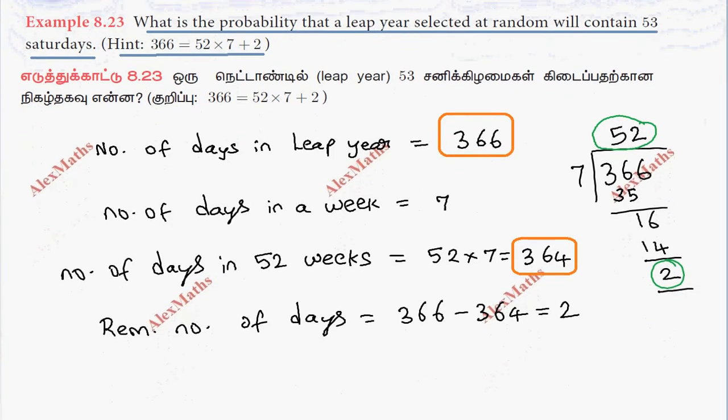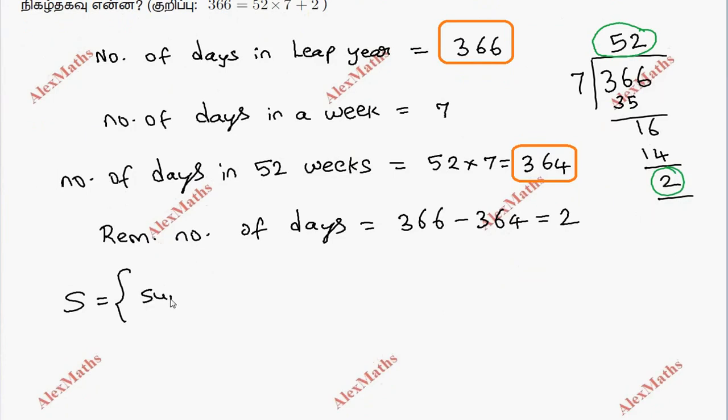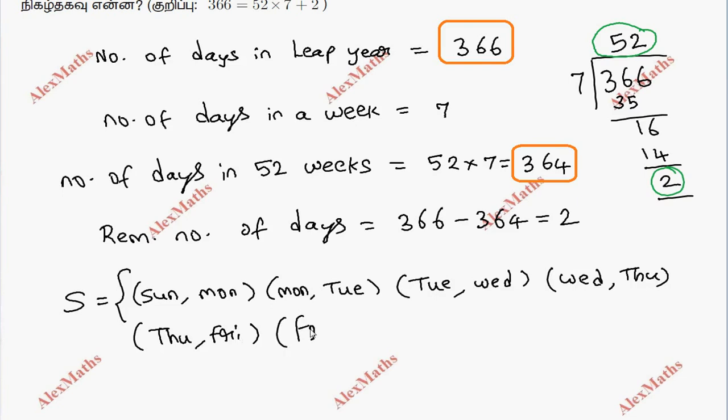These 2 days can be any combination. Sunday, Monday, or Monday, Tuesday, or Tuesday, Wednesday, or Wednesday, Thursday, or Thursday, Friday, or Friday, Saturday, or Saturday, Sunday. The remaining two days will be in these combinations.